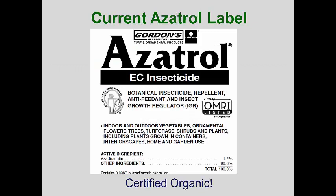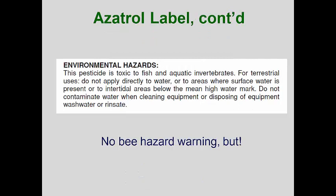Not all insecticides pose great risk to honey bees. The botanical insecticide azadirachtin seems to be one of these. Here is the environmental hazard section of that Azatrol label. Notice that there can be some hazards with aquatic systems, so you definitely don't want this insecticide to drop or run off into ponds or streams. Even though there is no specific bee warning, I still wouldn't want to spray this directly onto bees that are working blooming plants. Thus, use this on plants that are not in bloom, or make the application early or late in the day when most bees are in their homes.